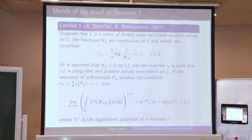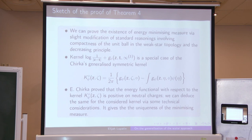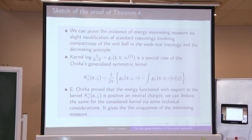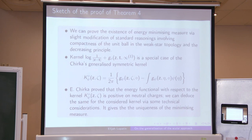I will omit further technical moments and say a few words about how to prove the uniqueness of the minimizing measure lambda. This follows from results of Chirka about the generalized symmetric kernel on a Riemann surface — he proved it is positive on neutral charges — and from the Gonchar-Rakhmanov result, which states that it is sufficient to prove uniqueness of the minimizing measure for our kernel. So we have estimated the asymptotics of Q_N^2 and proved that it coincides with the solution of the potential problem on a Riemann surface of positive genus.